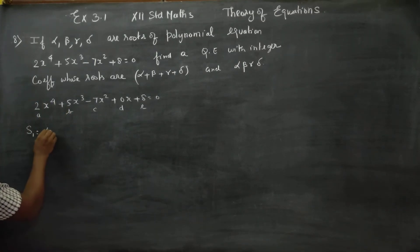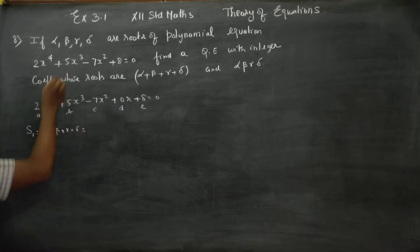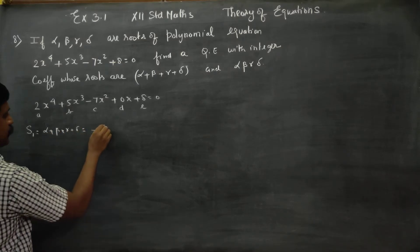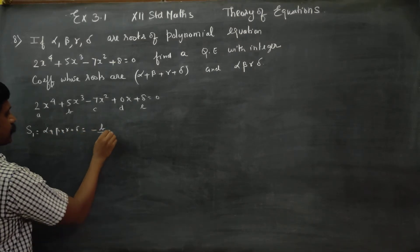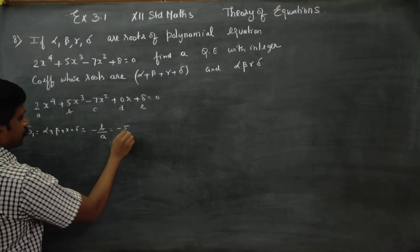First, alpha + beta + gamma + delta — one root taken at a time — is S1. My formula is minus B by A. Therefore, S1 = -5/2.